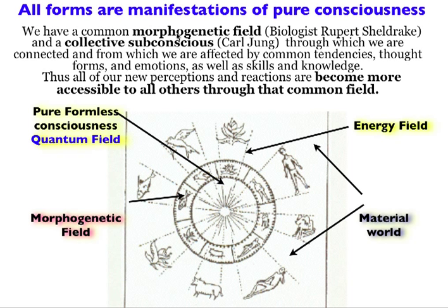It's made of two words: morphogenetic. Morpho means form, genetic means that which gives birth to form. These are Greek words. In which he says that we all have a common field — a common morphogenetic field — and we all input habits, knowledge, and tendencies into that field, and receive from that field tendencies, habits, knowledge, and skills.